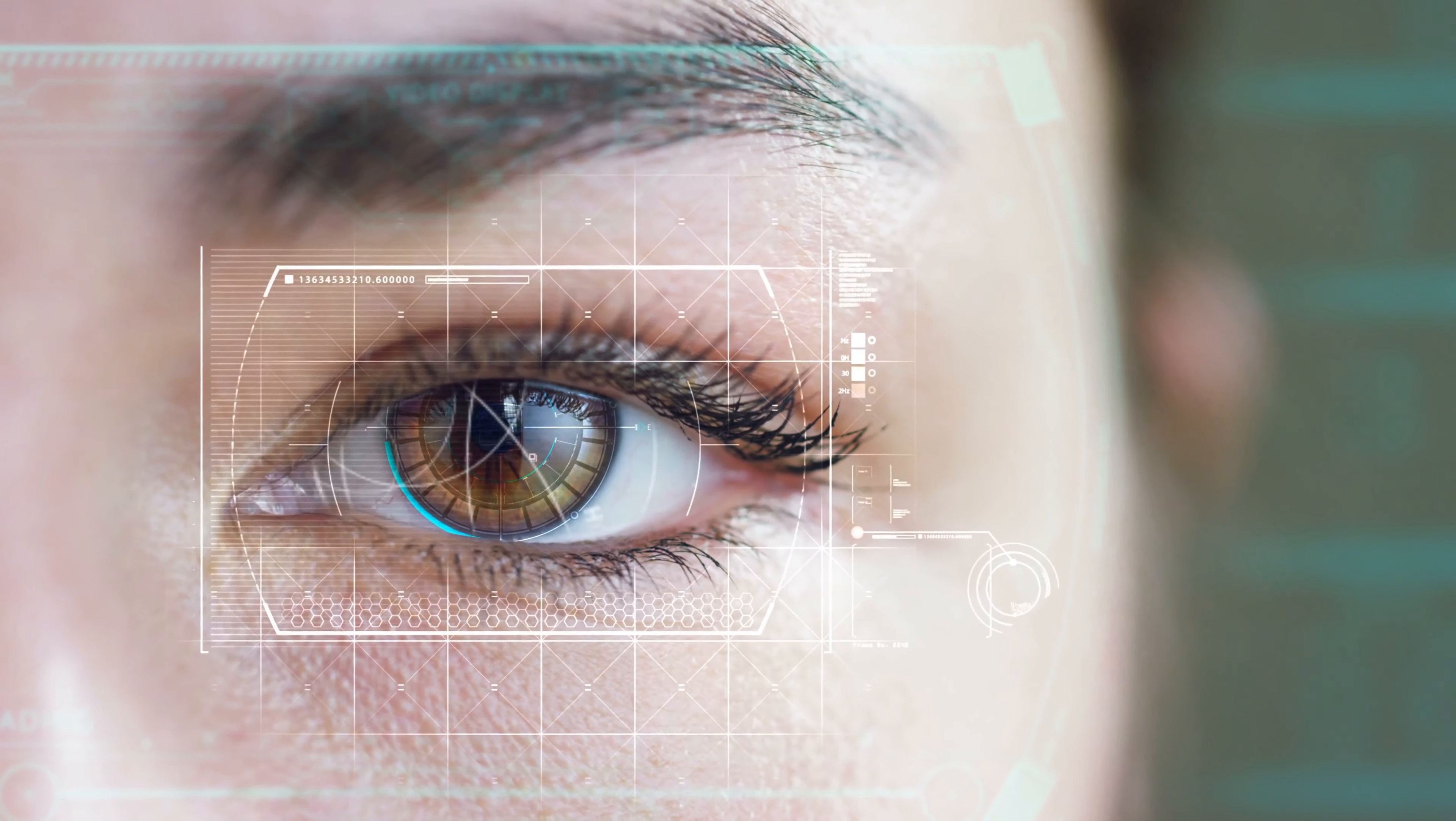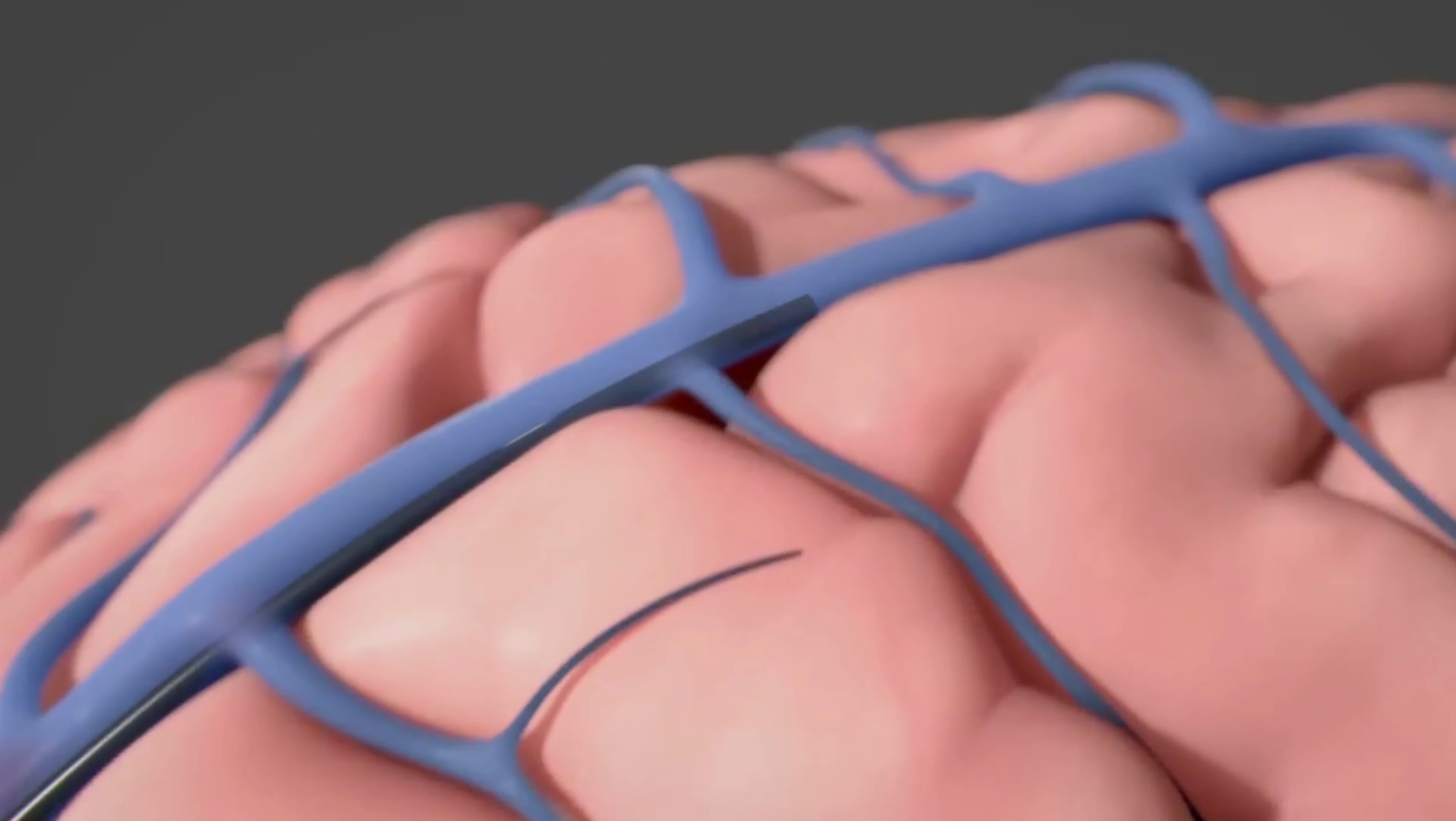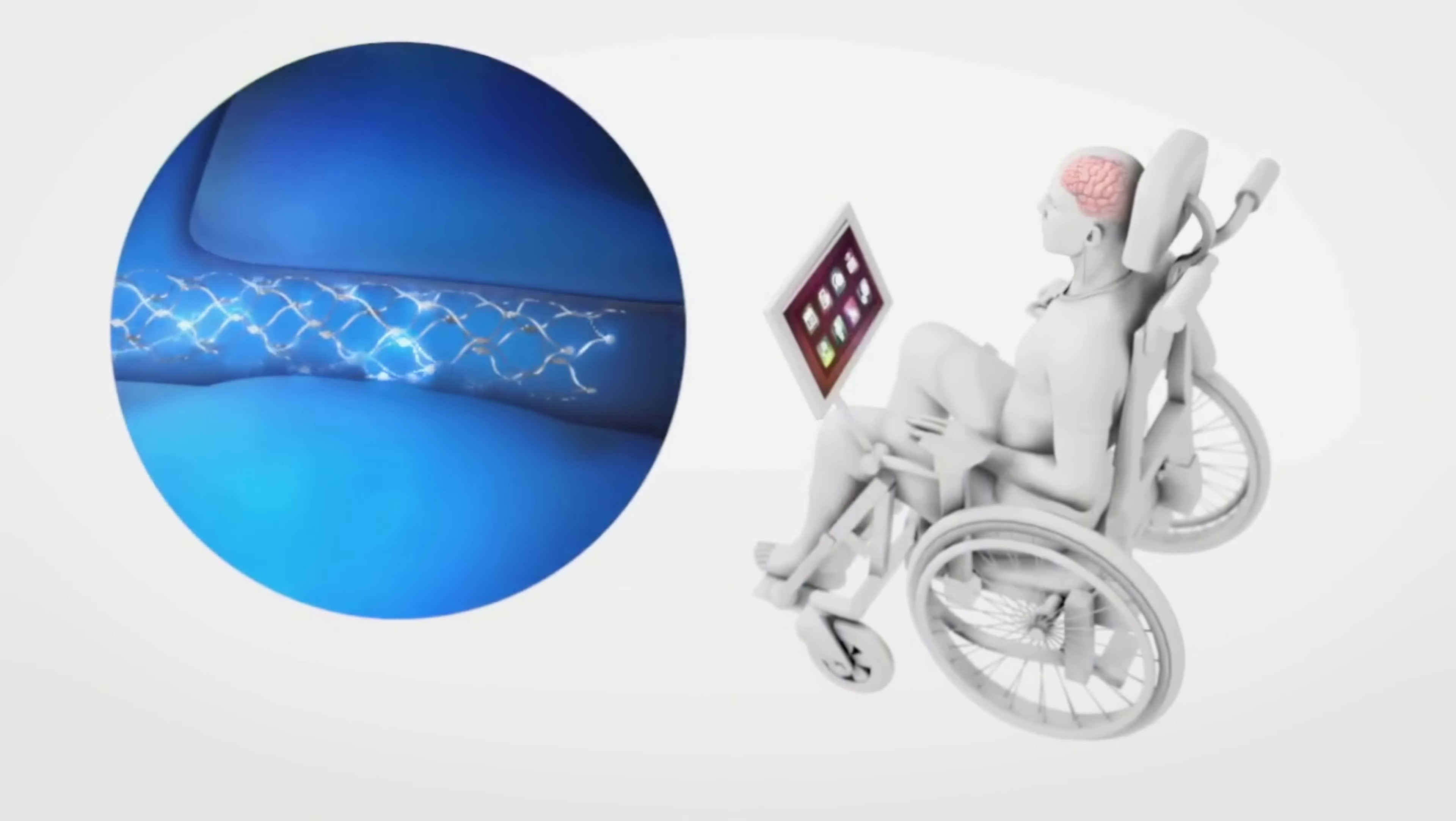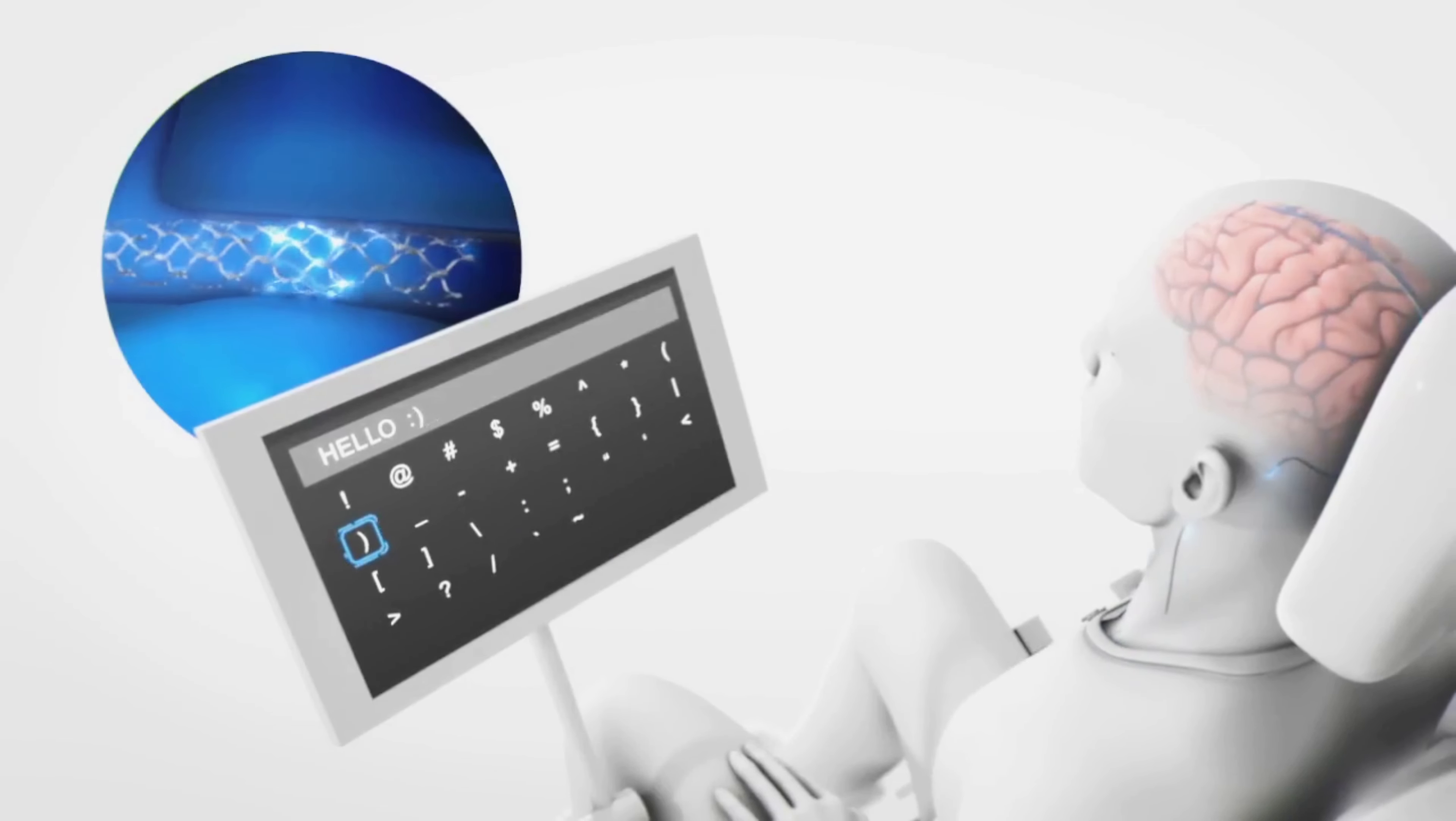In our previous videos, we talked about BCIs or brain-computer interfaces, particularly Elon Musk's Neuralink. Brain-computer interfaces are cool tech that let us control computers with our brains. It's like mind power in action. Imagine seeing with a camera instead of our eyes or moving things just by thinking about it.